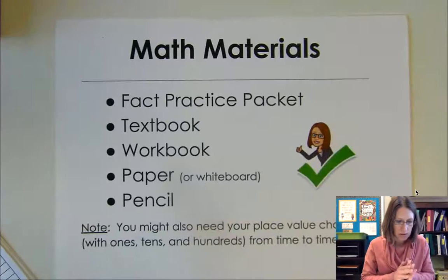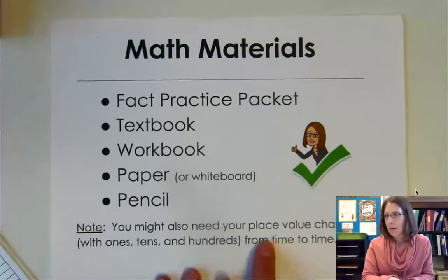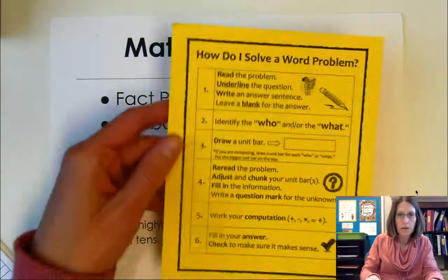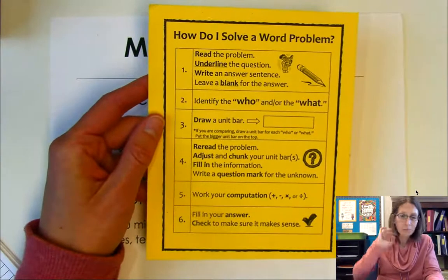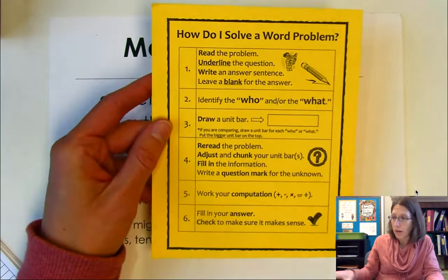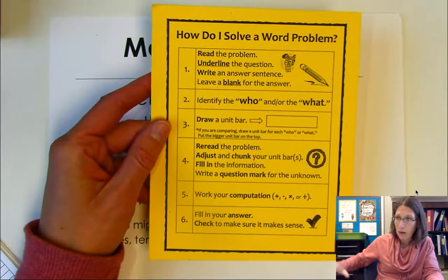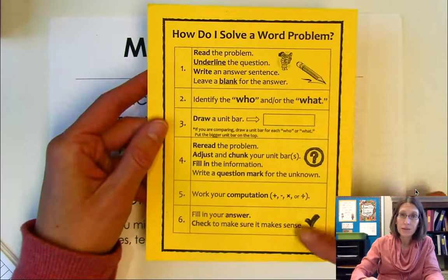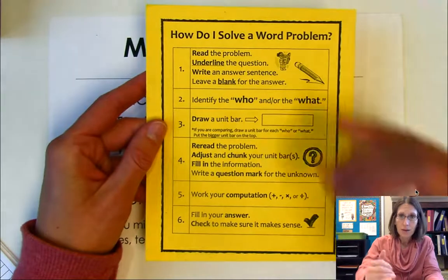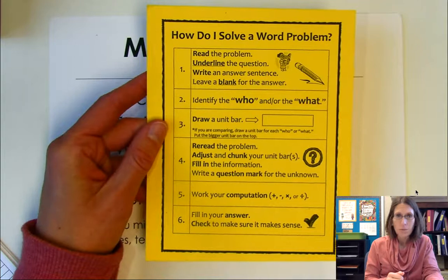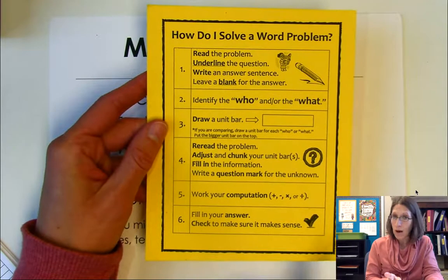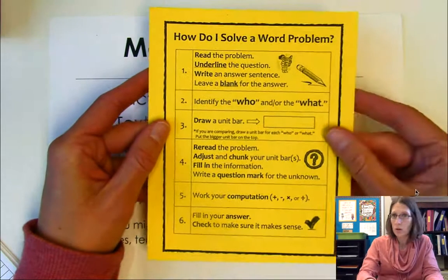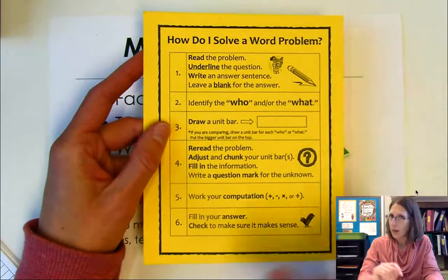All right. So today, there's a note. Sometimes we use our place value chart, but today we're not going to be using our place value chart. There is something else that would be prudent for you to have, and that is your steps to solve word problems. Today, we're going to be practicing solving word problems that are related to division. We're going to think about how following all these steps can really help us understand the problem and break it down into pieces. Also thinking about why it is prudent to draw unit bars. So if you do not have your little poster about how to solve a word problem, please pause the video and go and get that.